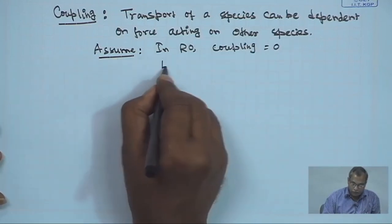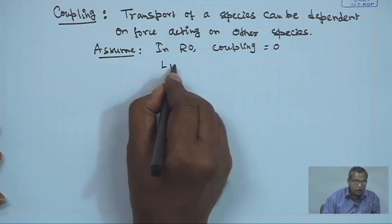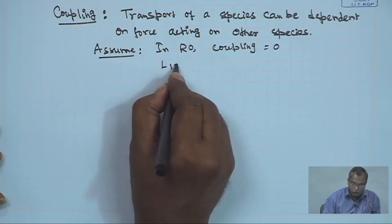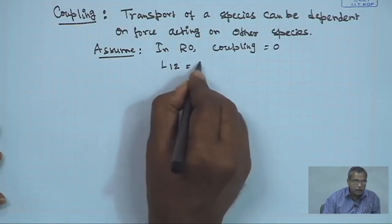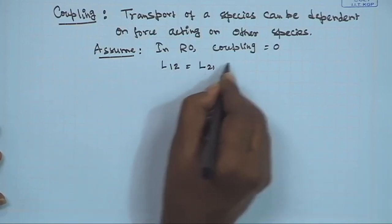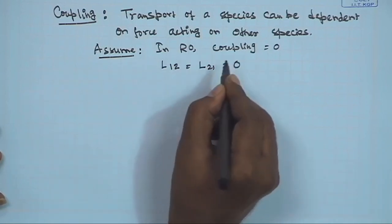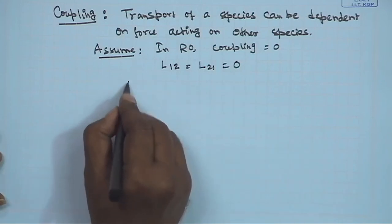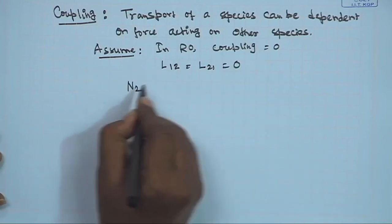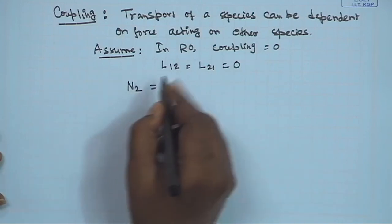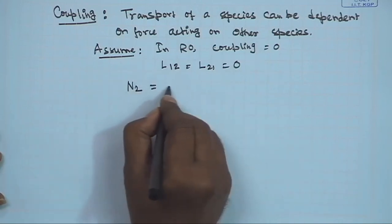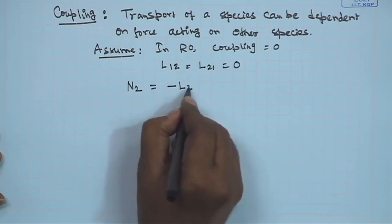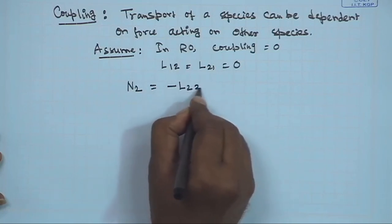Therefore, L_12 and L_21 are equal to zero. And we will have the expression of solvent flux as involving only L_22, since L_12 and L_21 are equal to zero.